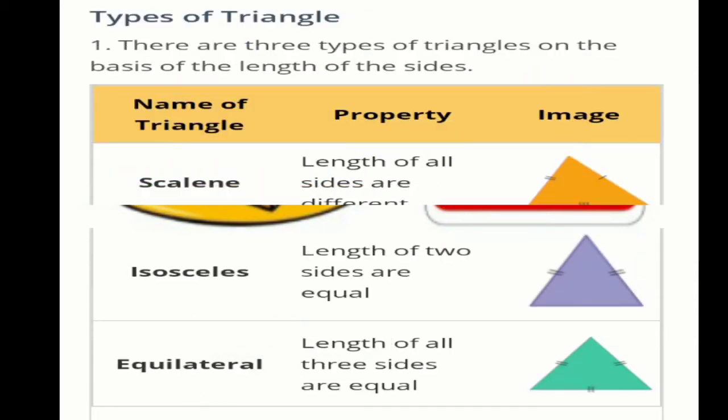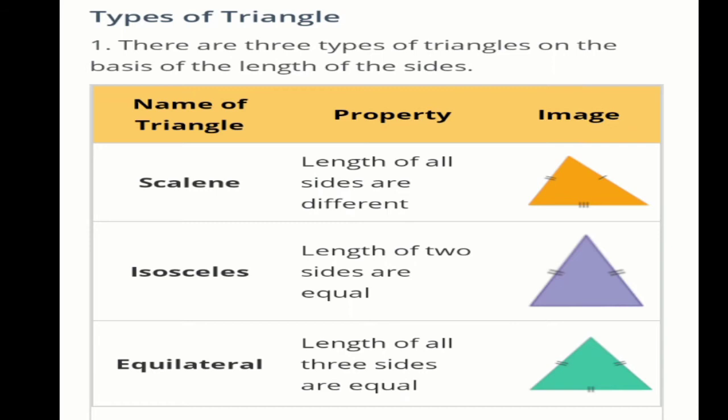Now let's move on to the types of triangles. There are broadly 2 categories of triangles — on the basis of length of sides and on the basis of angles.